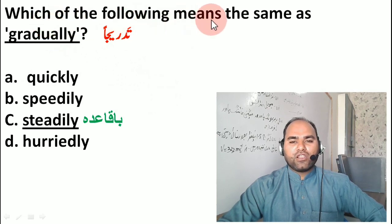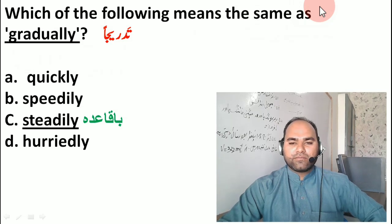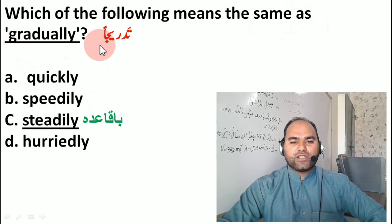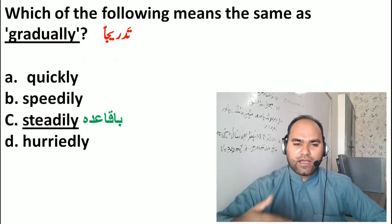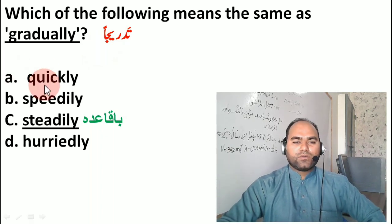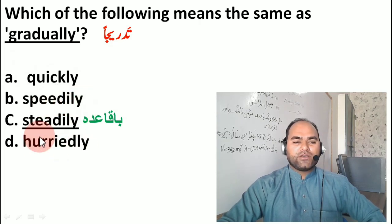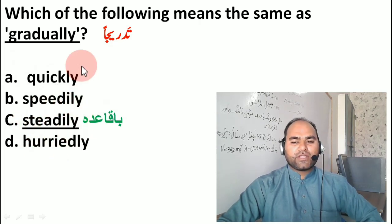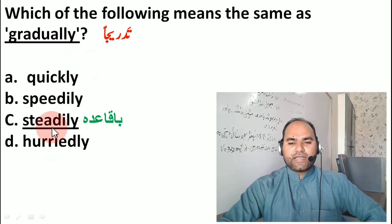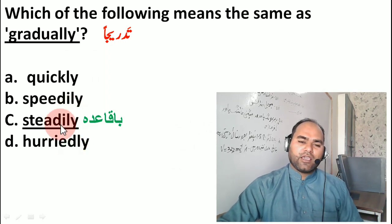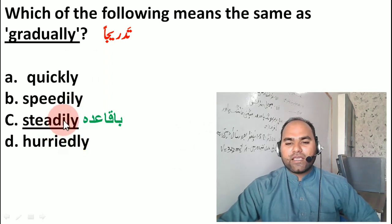Next, which of the following means the same as 'gradually'? Gradually means slowly — like 'slow and steady wins the race'. The answer is not quickly or speedily; the correct synonym for gradually is the option meaning slowly.